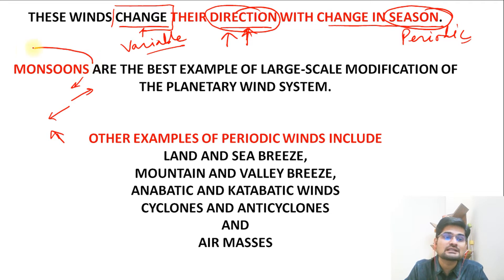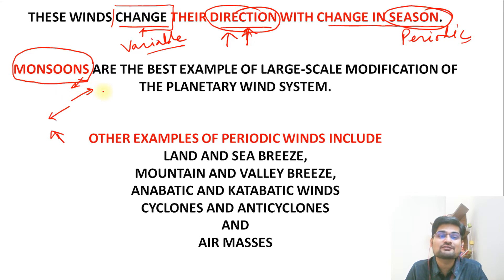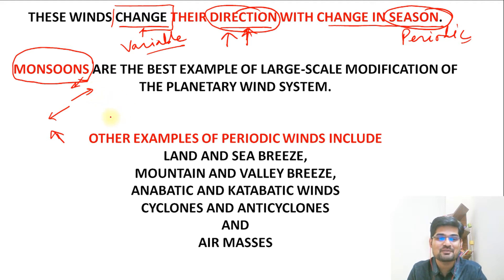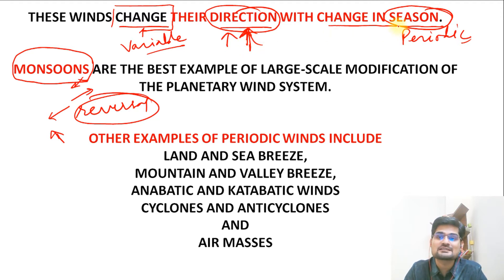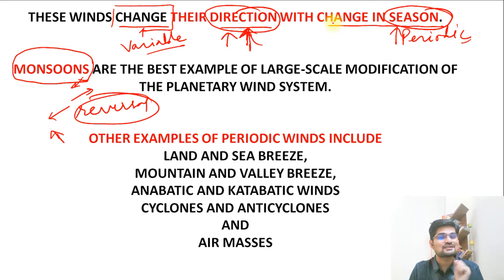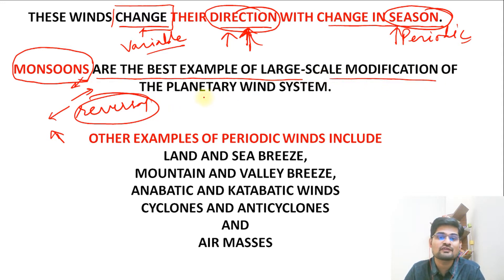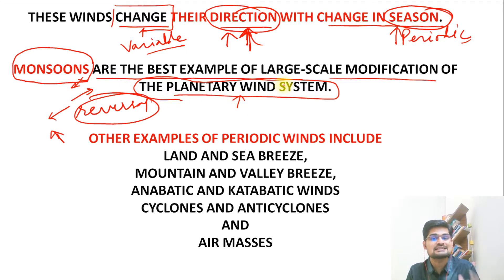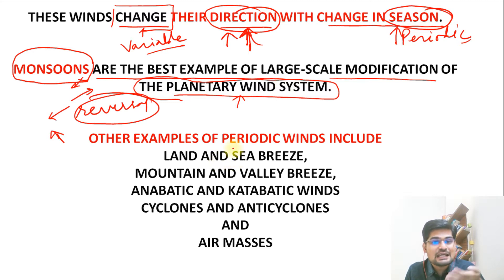For example, the best one is our monsoons that we see in India or South Asia. The basic definition of monsoon is that it is a reversal of the wind system — a reversal in direction with a periodic or seasonal nature. Monsoons are fixed to a particular season of the year. That is why monsoons are the best example of large-scale modification of the planetary wind system — when the planetary wind system at a certain scale in a certain season is modified, that forms the periodic or secondary winds.